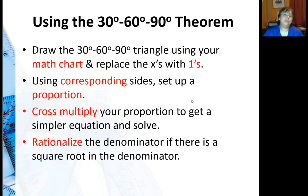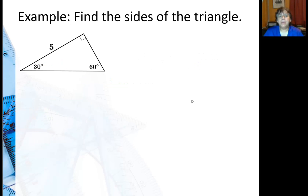Cross multiply your proportion to get a simpler equation and solve. And you really should rationalize the denominator if there is a square root in the denominator, which will occur maybe a half, a third of the time.